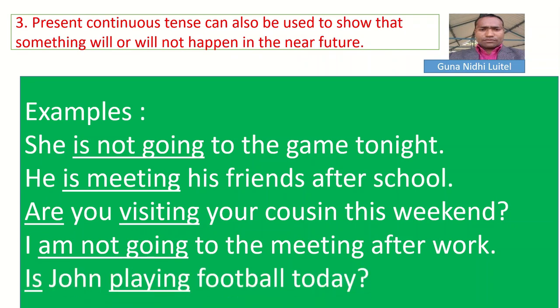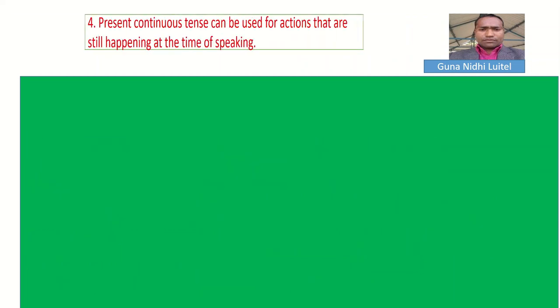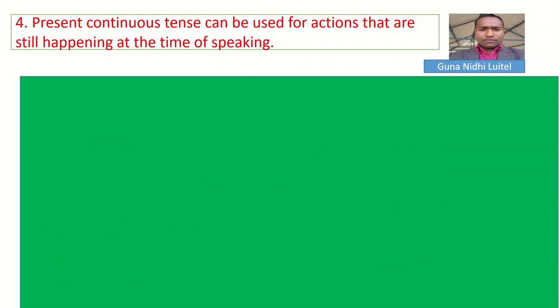And: 'Is John playing football today?' — not sure, asking whether it happens in the future or not. So let us learn the fourth rule. Present continuous tense can be used for actions that are still happening at the time of speaking — happening in the time of speaking. Remember, the speaker is speaking and the action is happening there.